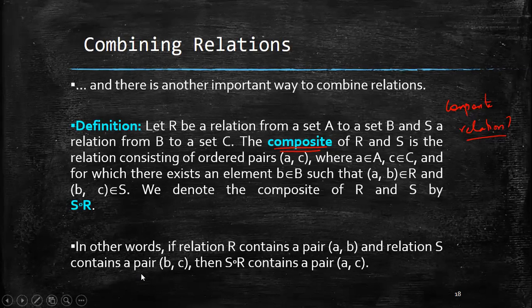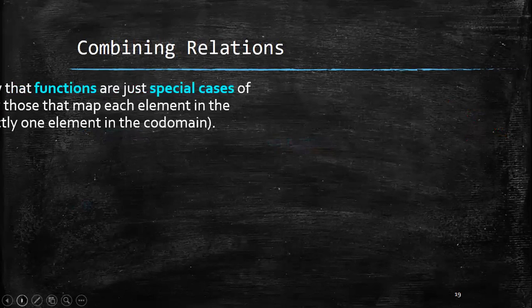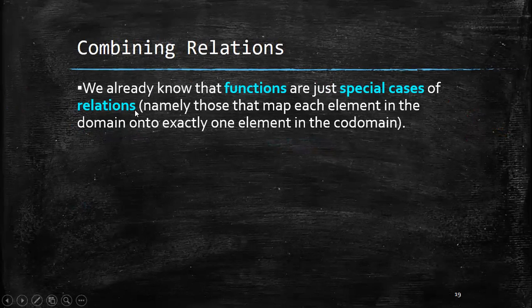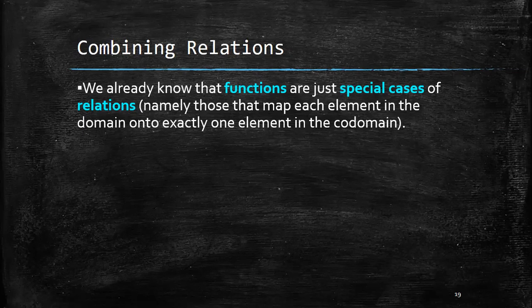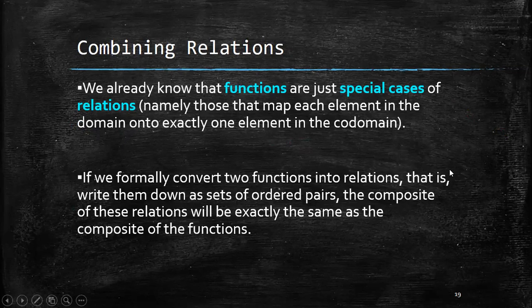In other words, if relation R contains a pair (A, B) and relation S contains a pair (B, C), then S∘R contains the pair (A, C) — we exclude the common element. We already know that functions are special cases of relations, where each element in the domain maps onto exactly one element in the co-domain. If we convert two functions into relations as sets of ordered pairs, the composite of these relations will be exactly the same as the composite of the functions.